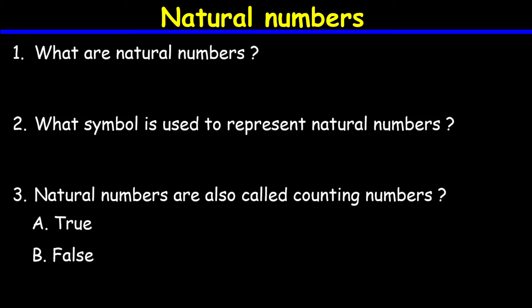Hello everyone. In this lesson you are going to learn about natural numbers. Natural numbers are 1, 2, 3, 4, 5, 6, 7, and so on. It continues like this, it never ends — natural numbers are infinite. The first and the smallest natural number is 1, but there is no last or greatest natural number.